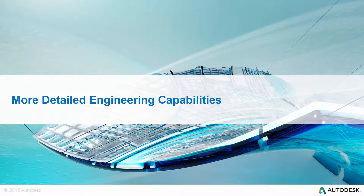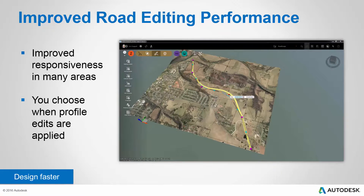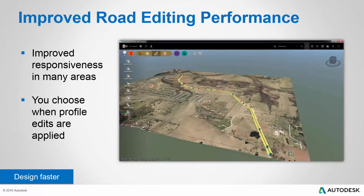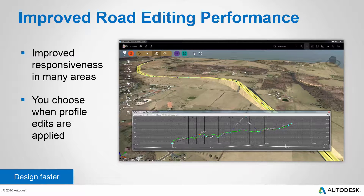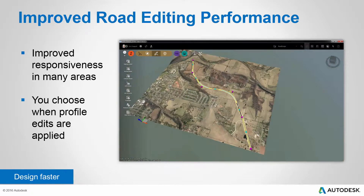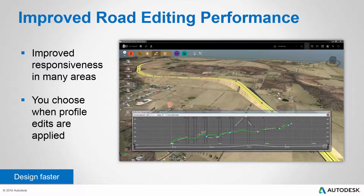Let's talk now about additions and enhancements to InfraWorks 360's detailed engineering capabilities, starting with improved road editing performance. In many areas when you're editing roads in this latest update, they're just faster. As I'm making changes using the gizmos on the road, the changes are implemented much more quickly. We've also made a change in the profile view so that you can make multiple edits within this view, and they won't be committed to the model until your cursor leaves the window — all changes are then implemented to the model at once. Designing faster is something we all want to do, and these changes allow you to do just that.